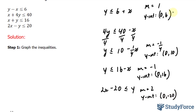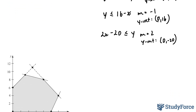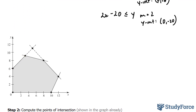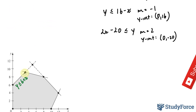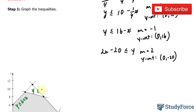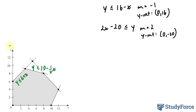Following this, I can now plot the y-intercept for each of these and then use the slope to guide me as to where my next point will be. If you do it correctly, you should end up with a graph that looks like this, where this line represents y ≤ 6 + x, this line represents y ≤ 10 - ¼x, this line extends to a y-intercept of 16 representing y ≤ 16 - x, and this line represents 2x - 20 ≤ y. Notice that this part is shaded, and there's a reason for that — the only permissible values for x and y are coordinates of points on the edges of or within the shaded region. These are called the feasible solutions.